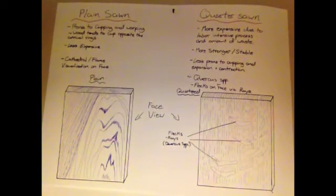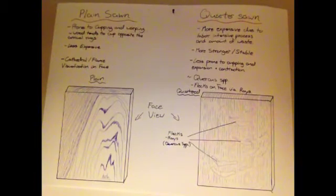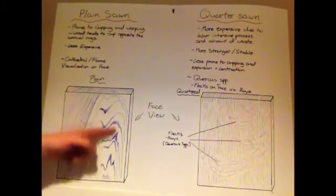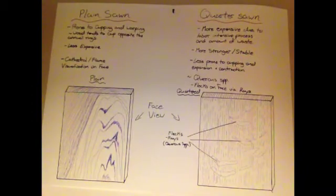Plain sawn wood is prone to cupping and warping. This is because wood tends to cup opposite the annual rings. It is less expensive because it doesn't create as much waste. It is identified by the cathedral or flame visualizations on the face of the board.